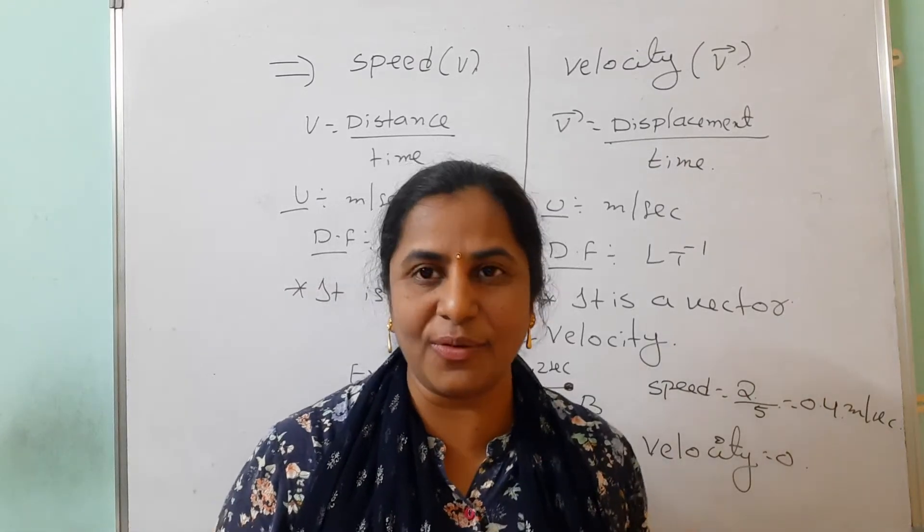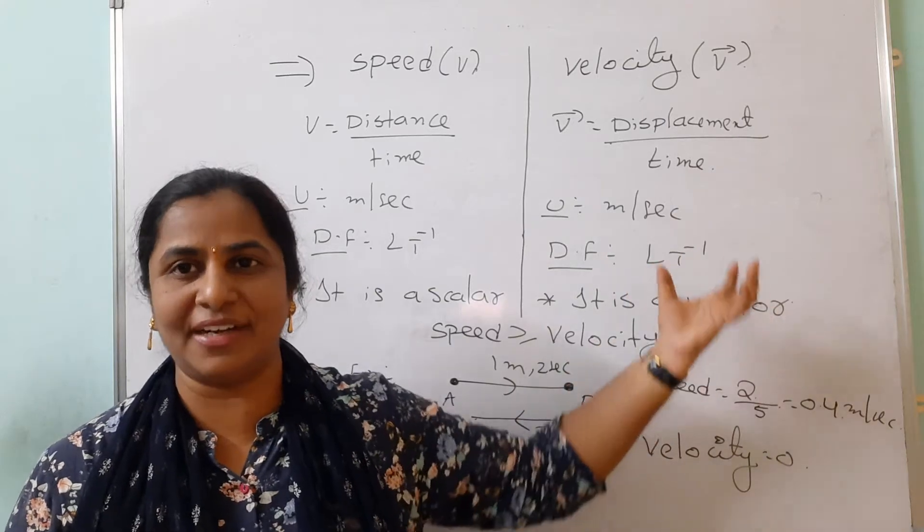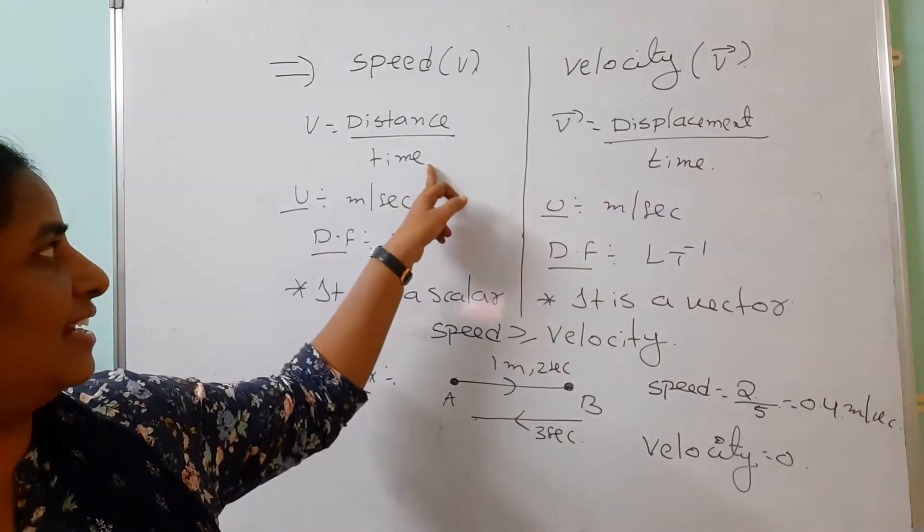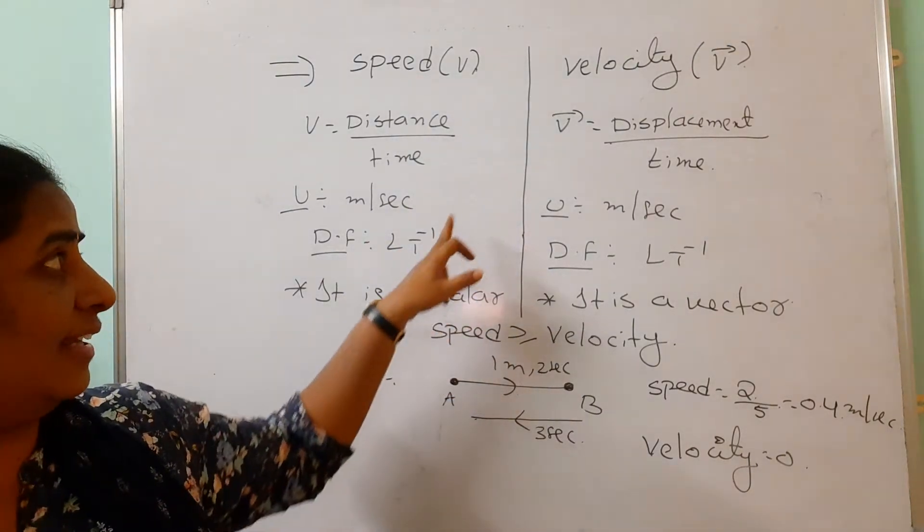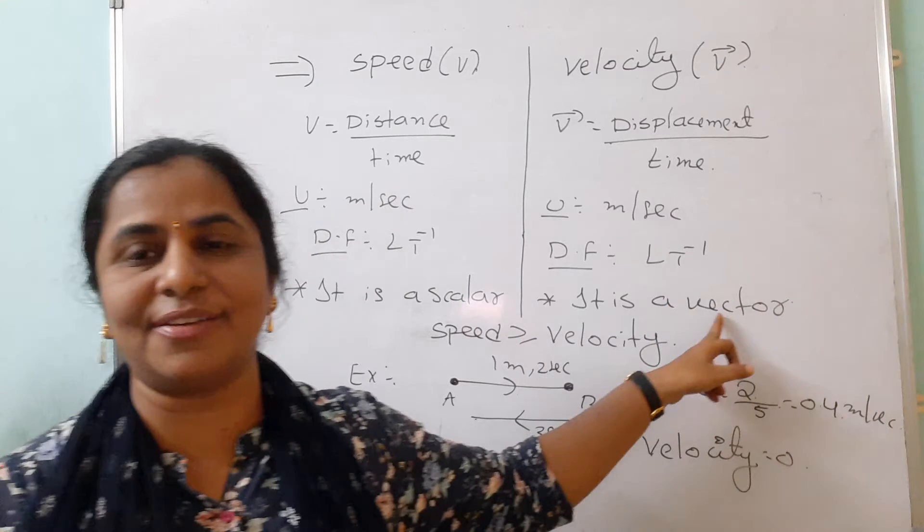Hello, welcome back to our channel. In our physics daily hunt, we are going to discuss what is speed and what is velocity. Speed is distance by time. This is a scalar quantity. Velocity is displacement by time. Displacement is a vector, which means this is a vector quantity.